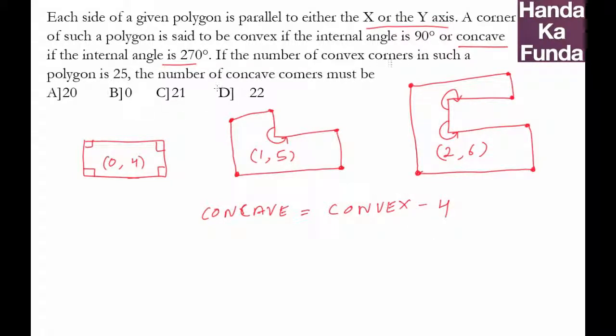And how many convex corners do I have here? I have 25 convex corners. So how many concave corners will be there? Four less than that, 25 minus four. Or I get my answer as option C, which is 21.